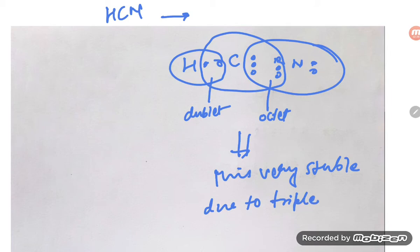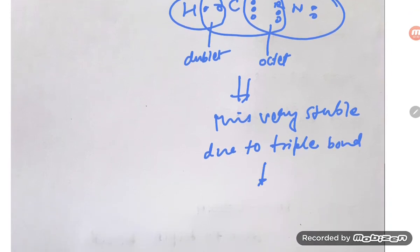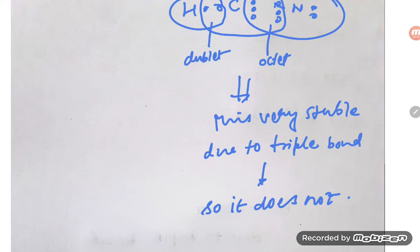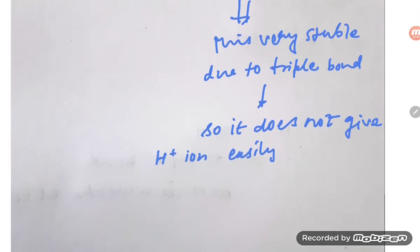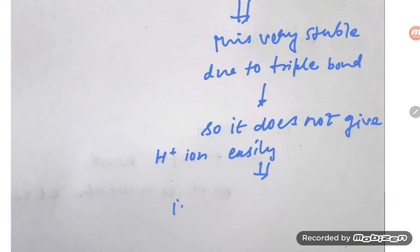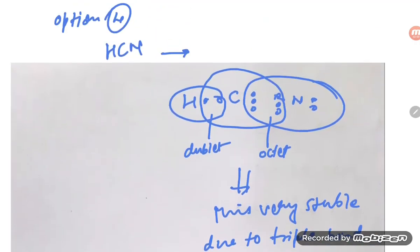HCN is very stable due to the triple bond between carbon and nitrogen. Because of this triple bond stability, HCN does not give H⁺ ions easily. Therefore, HCN is a weak acid.